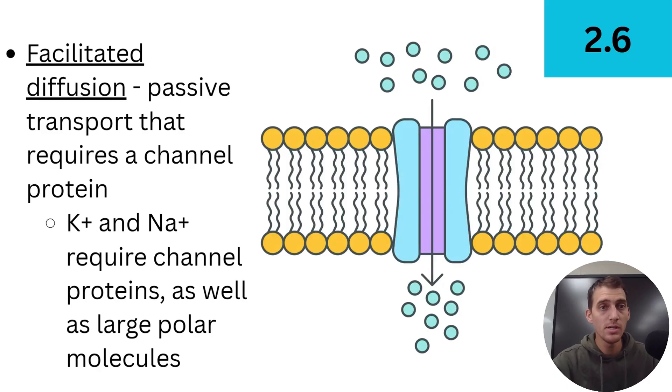Here's your formal definition. It is passive transport that requires a channel protein. That's pretty much it. So ions like potassium and sodium require channel proteins as well as some large polar molecules, because remember polar doesn't want to interact with the nonpolar parts of the fatty acid tails of the bilayer. So those large polar molecules are going to have to pass through some channel proteins as well. These channel proteins facilitate, they make it easier for these particular molecules, the charged molecules and the polar molecules to diffuse. That's pretty much it.